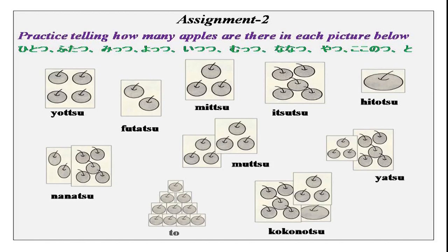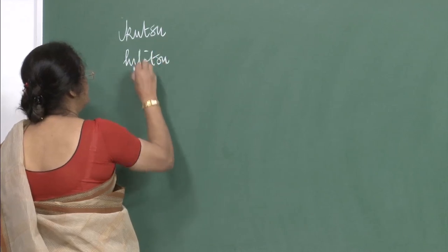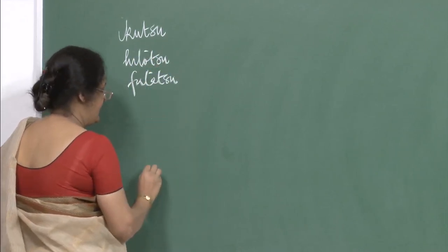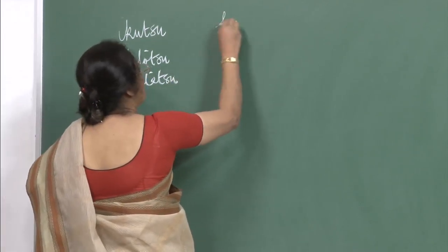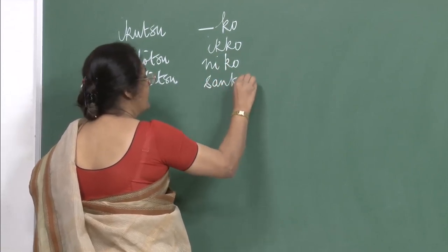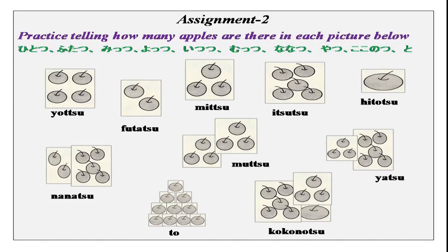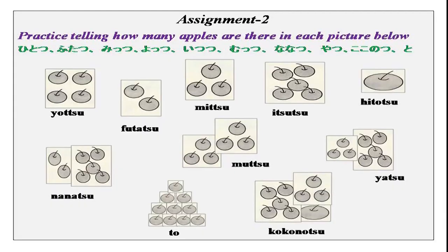Kokonotsu and to. One thing I want to tell you: this is ikutsu, and hitotsu, futatsu and so on till ten, to. After this is the ko counter, which we did — like ikko, niko, sankko and so on. The numbers are placed randomly so that you do not get used to just saying one after the other — hitotsu, futatsu, mitsu, yotsu, itsutsu, mutsu — but you can look at a thing and immediately say what number it is.